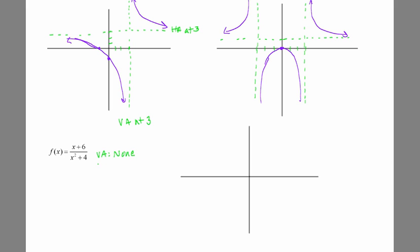We determined a y-intercept at (0, 3/2). We determined an x-intercept at negative 6. And we determined that it had a horizontal asymptote at the x-axis, y equals 0.